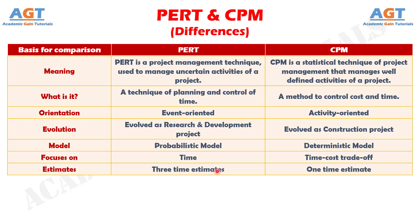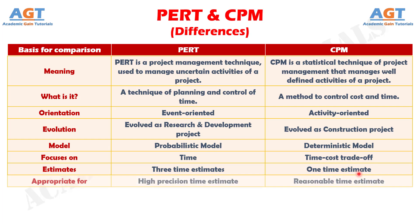Number 7: There are 3 time estimates in PERT — optimistic time, most likely time, and pessimistic time. On the other hand, there is only one time estimate in CPM. Number 8: PERT technique is best suited for a high precision time estimate, whereas CPM is appropriate for a reasonable time estimate.